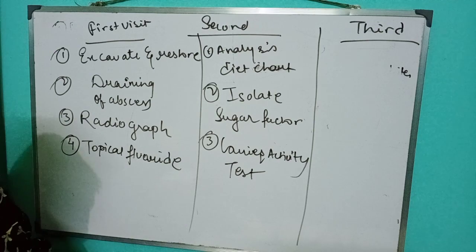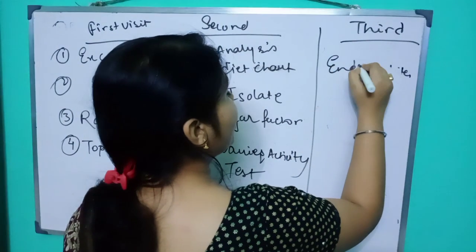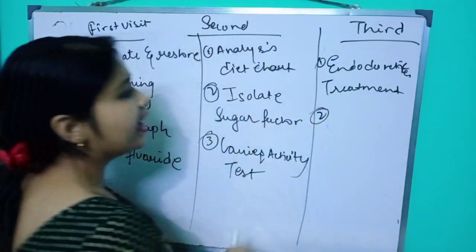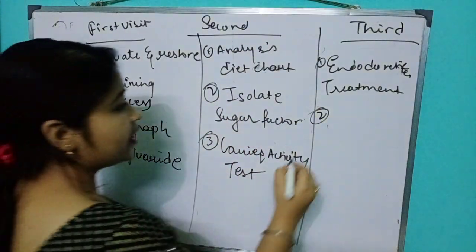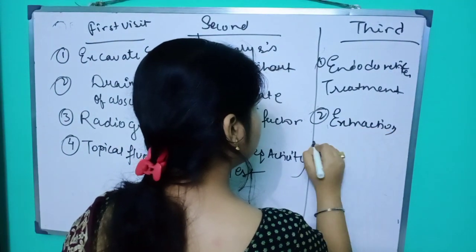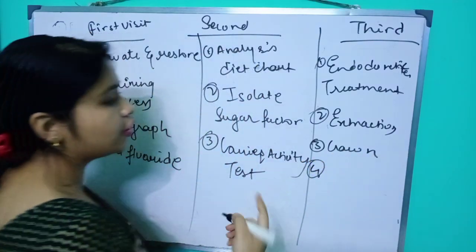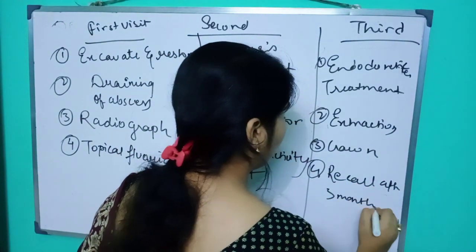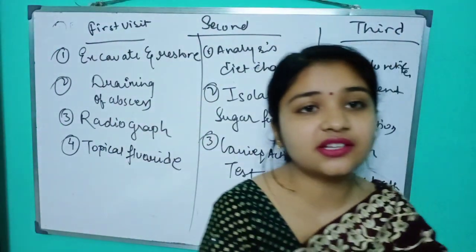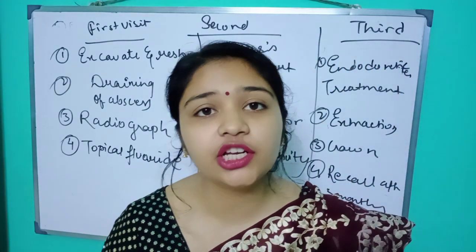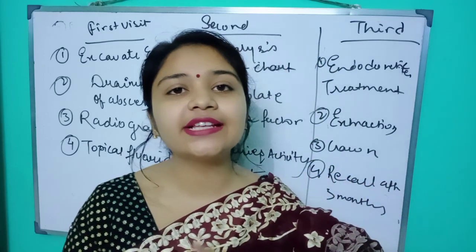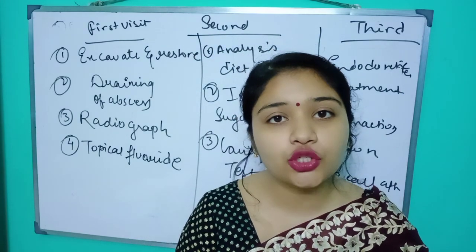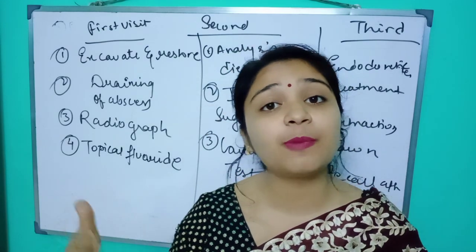In the third visit: first, carry out endodontic treatment — RCT, pulpectomy, or pulpotomy as needed. Second, perform extraction if required. Third, place the crown. Fourth, schedule a recall appointment after three months. These are the clinical steps for managing a child who presents with extensive caries, pain, and the need for a stainless steel crown.